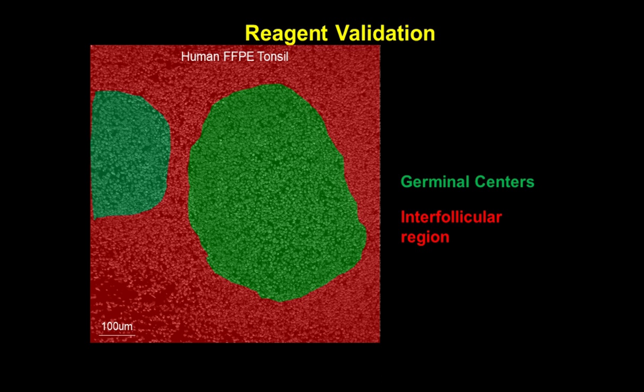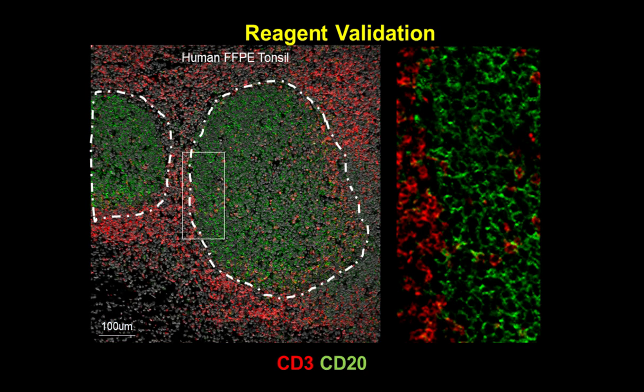Tonsil can be broken down into general regions: in green, the ball-like structure is a follicle or germinal center, and in red is the interfollicular region. Germinal centers are usually enriched in B cells, while the interfollicular region is more T cell-enriched. To demonstrate this, CD3 — a specific T cell lineage marker — is well enriched along the border between the germinal center and interfollicular region, whereas CD20 marks B cells in the germinal center. We see a nice discrete border delineating T and B cells, and importantly, the tissue was stained simultaneously with all antibodies, with all channels read out simultaneously — this is not a cyclical process.